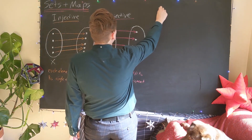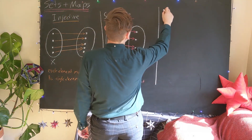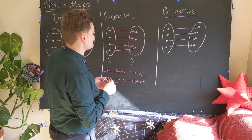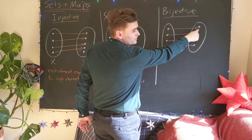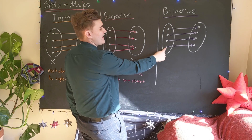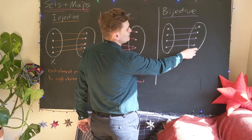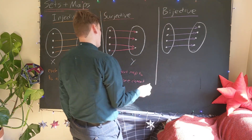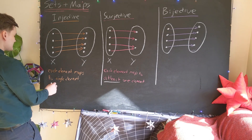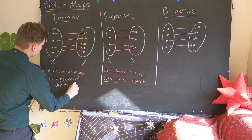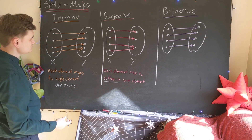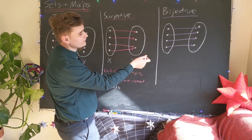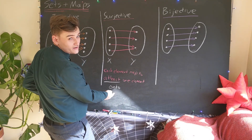If a map is both injective and surjective, it's what's known as bijective. To be injective, each element only maps to a single element; to be surjective, every codomain element must be mapped to. Other terminology commonly used: an injective map is called a one-to-one map, a surjective map is sometimes called an onto map, and if a map is both one-to-one and onto, it is bijective.